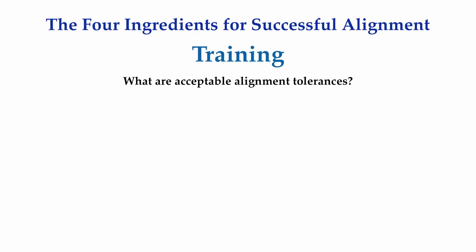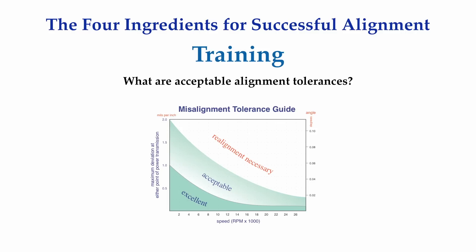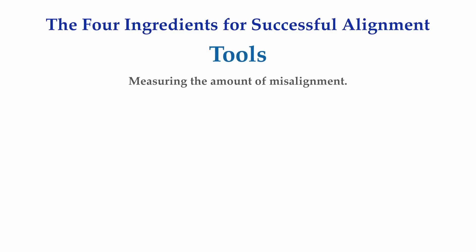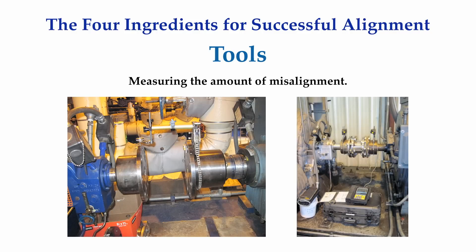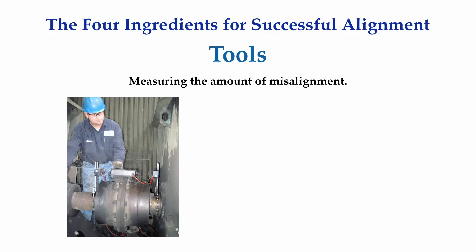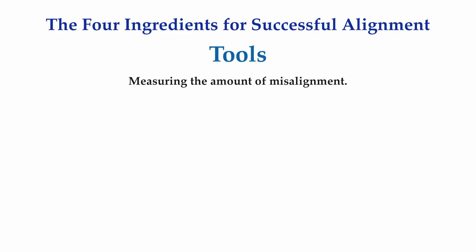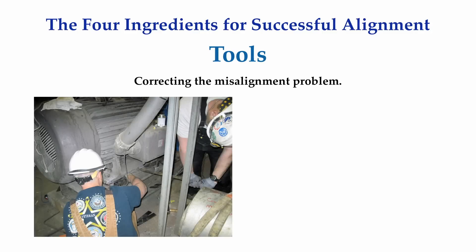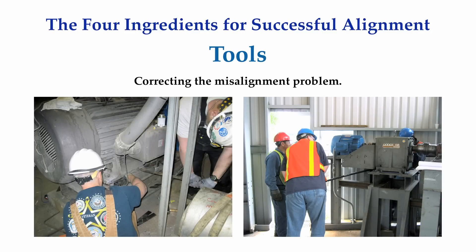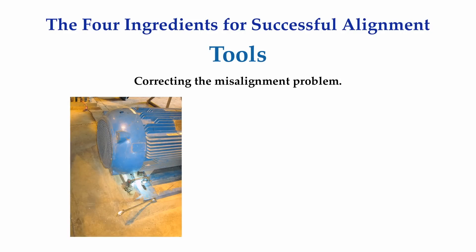Perfect alignment in the real world is virtually impossible to achieve. It is important to understand what is an acceptable amount of misalignment and the difference between coupling tolerances and alignment tolerances. When you hear about alignment tools, usually the first thing that comes to mind are alignment measuring tools, like dial indicators and laser detector systems. But dial indicators or lasers have never actually aligned any piece of machinery — all they do is measure the amount of misalignment. You will also need tools to loosen foot bolts, safely lift machines, add or remove shim stock, and precisely move machinery sideways or axially.